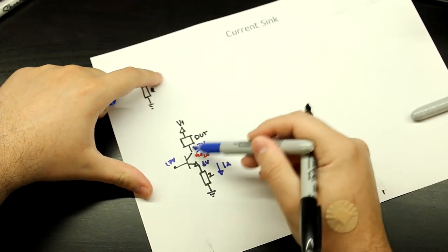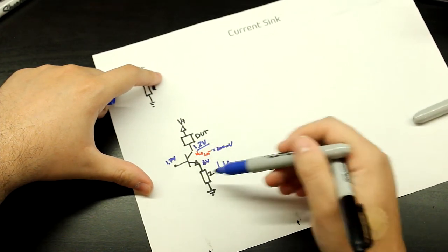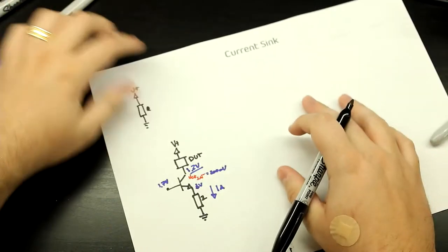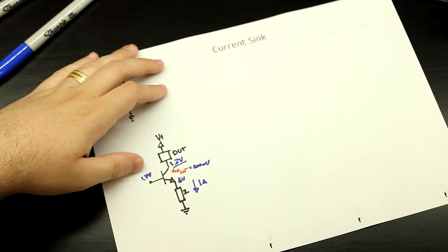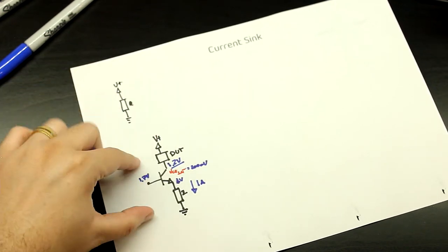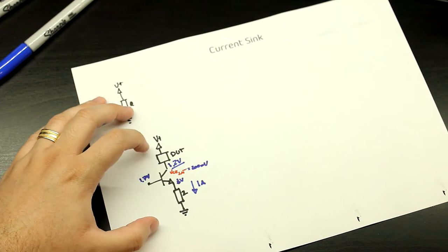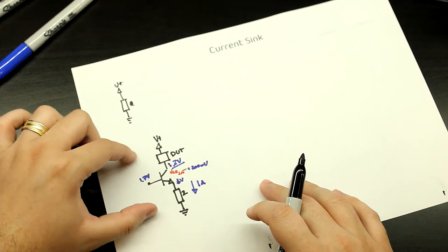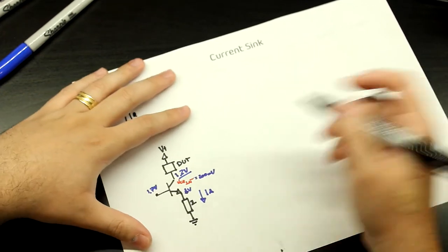So if we respect this voltage — the emitter voltage plus the VCE sat — it will always be drawing the exact same current, no matter how this changes. This requires you to use some sort of reference here, because if you're just putting a resistor divider with the supply rail, there's a problem: it's still dependent on your supply rail. If this supply swings, you also get a swing here, and your current will change.